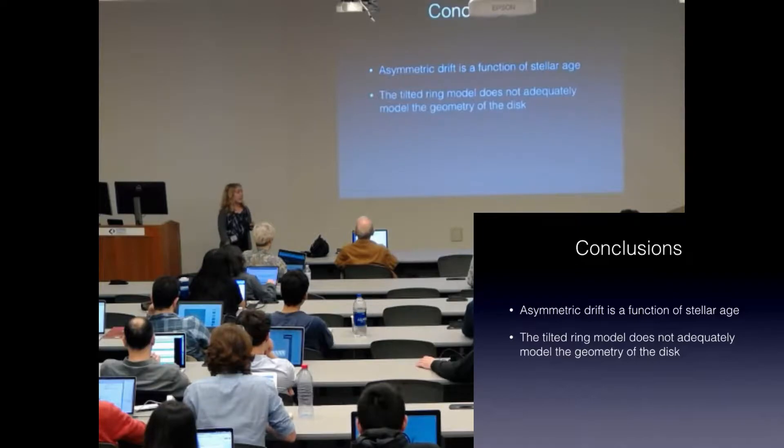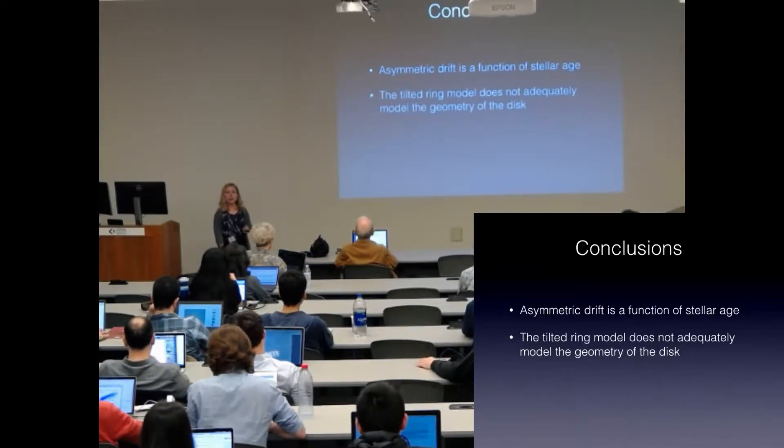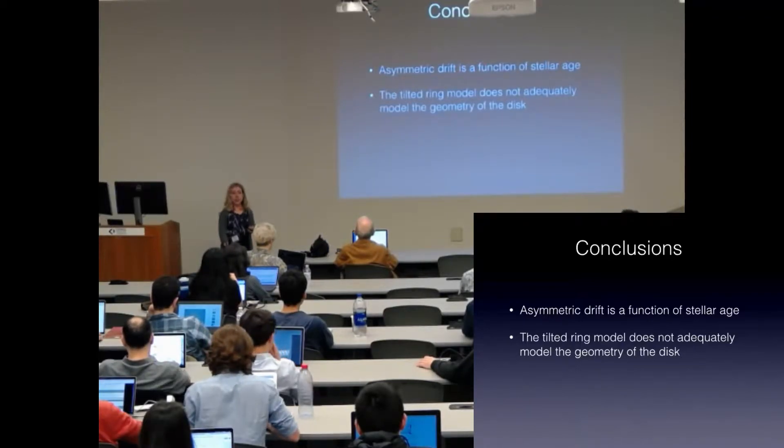There are two main conclusions to take away from this talk. Asymmetric drift is a function of stellar age like velocity dispersion. And the tilted ring model does not do an adequate job explaining the complexity of M31's disk geometry.